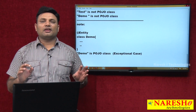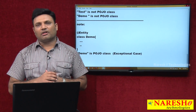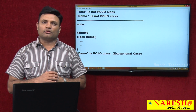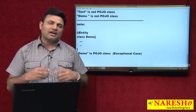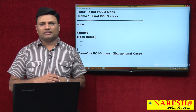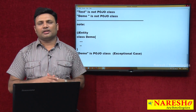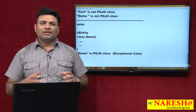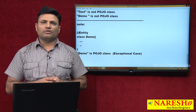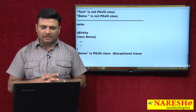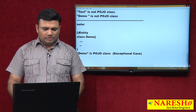So, an ordinary class without any specialities is called a POJO class. But if a class has some annotations — if the class is annotated with some annotations — we still call it a POJO class as an exceptional case.